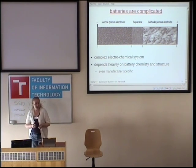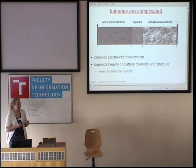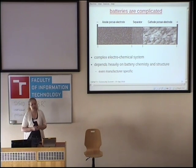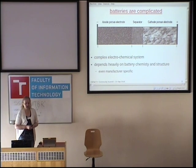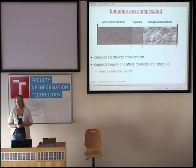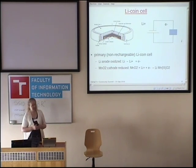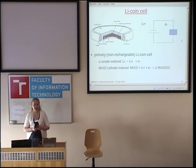In fact, batteries are rather complicated. This picture is a scanning electron microscope photograph of the inside of a lithium battery. A battery is a very complex electrochemical system. Its behavior depends very heavily on the battery chemistry and structure, on the intensity and timing of the applied load, and external factors such as temperature. Most of our work looks at lithium coin cells — small, non-rechargeable, inexpensive, lightweight batteries, the sort of thing you might use in a body area network, on a very small sensor, or in IoT-type applications.